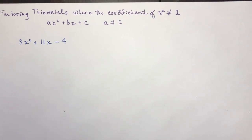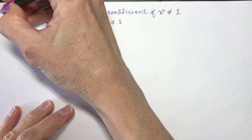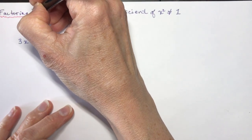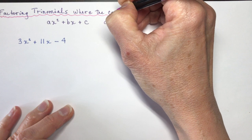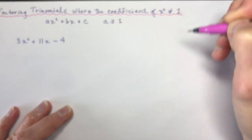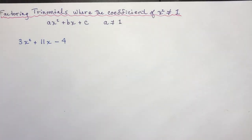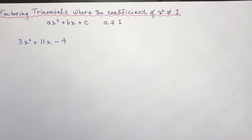Factoring trinomials where the coefficient of x squared is not equal to 1. When the coefficient of x squared is not equal to 1, and when you cannot factor it out — in other words, the coefficient is not a common factor — and you did see some of those in the last homework example.